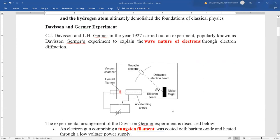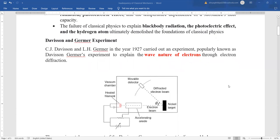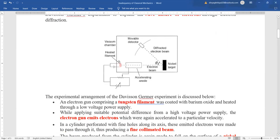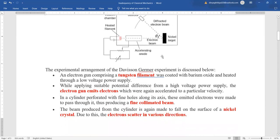This is the experimental setup of Davison-Germa experiment, which proved the wave nature of electrons through electron diffraction. The setup consists of a tungsten filament which is heated with a power supply to emit electrons. They pass through an accelerating anode, gaining velocity, and emerge as a fine collimated beam to fall on the nickel target.